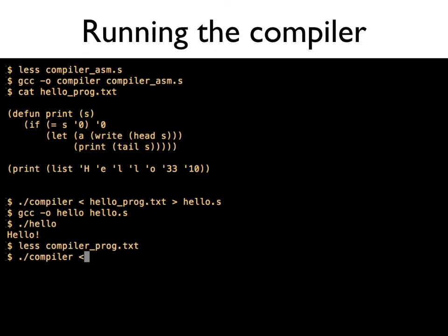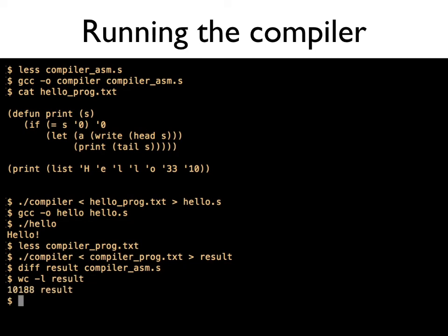So now let's compile the compiler. We can pipe in the compiler implementation into our compiler and pipe out the result into a file called result. Now I'm checking the difference between result and the original compiler_asm.s and find that there is no difference. Even though this is quite a long file which word count will show. More than 10,000 lines. And that's the demo.